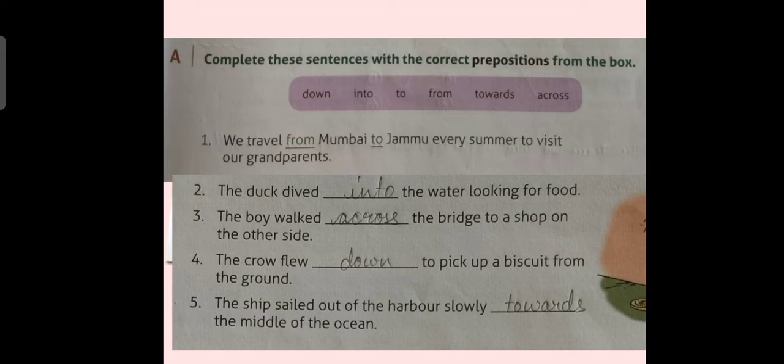First sentence: we travel from Mumbai to Jammu every summer to visit our grandparents. In the first blank of sentence number 1, we will fill from, and in the second blank of sentence number 1 we will fill to preposition to complete the sentence. Sentence number 2: the duck dived into the water looking for food. Here, in the second sentence, we will fill the preposition into in the blank so that the sentence may be complete.